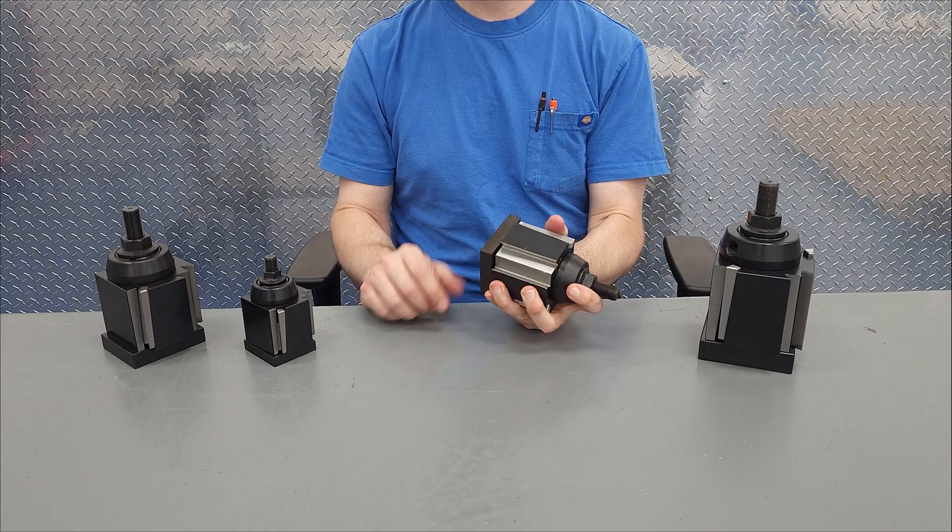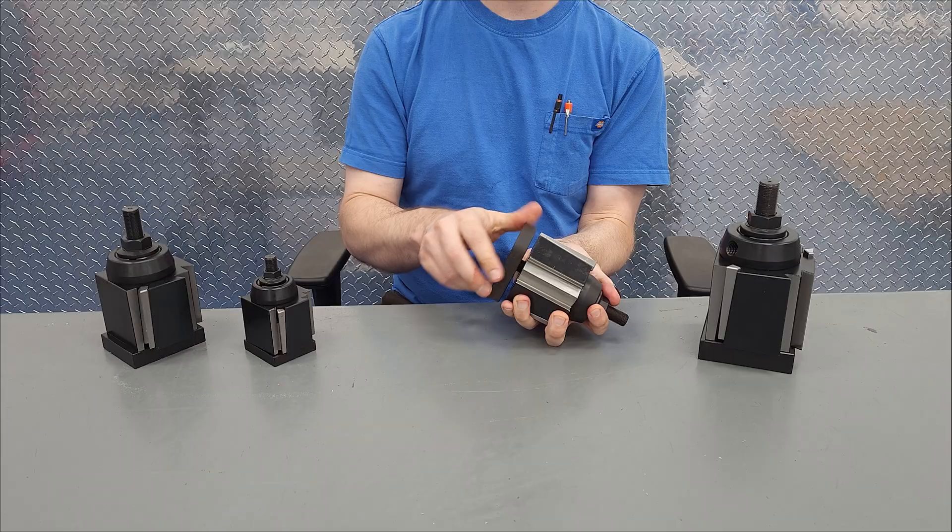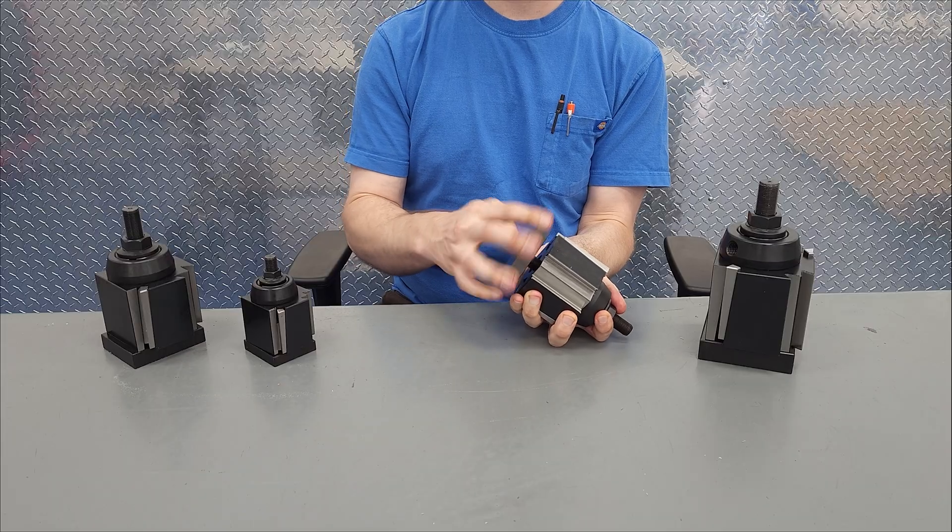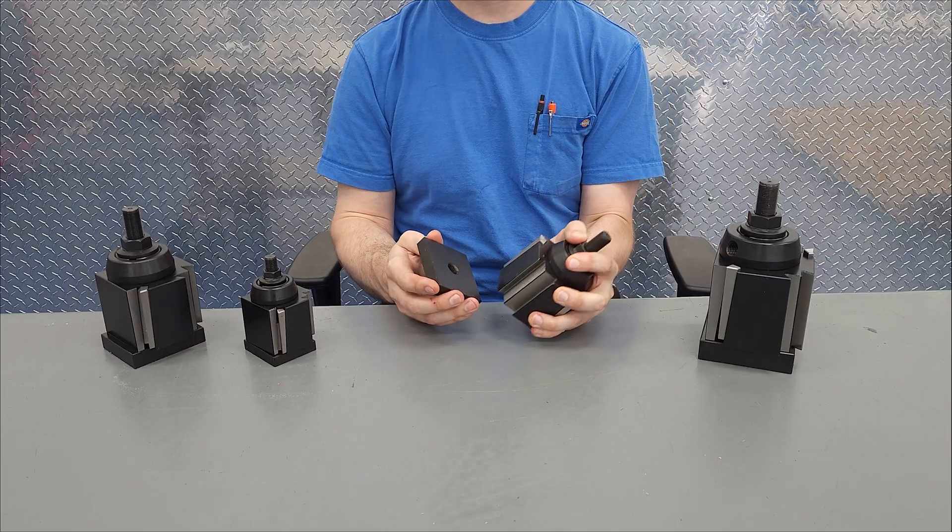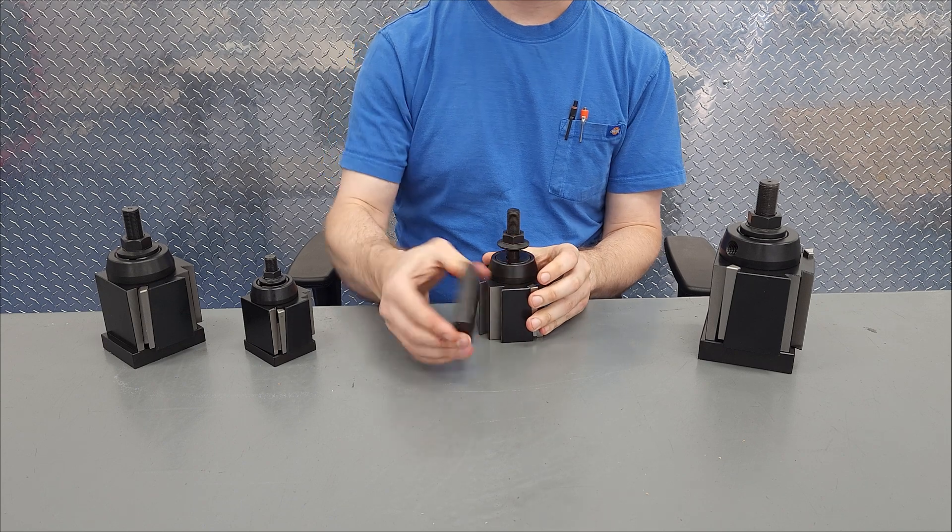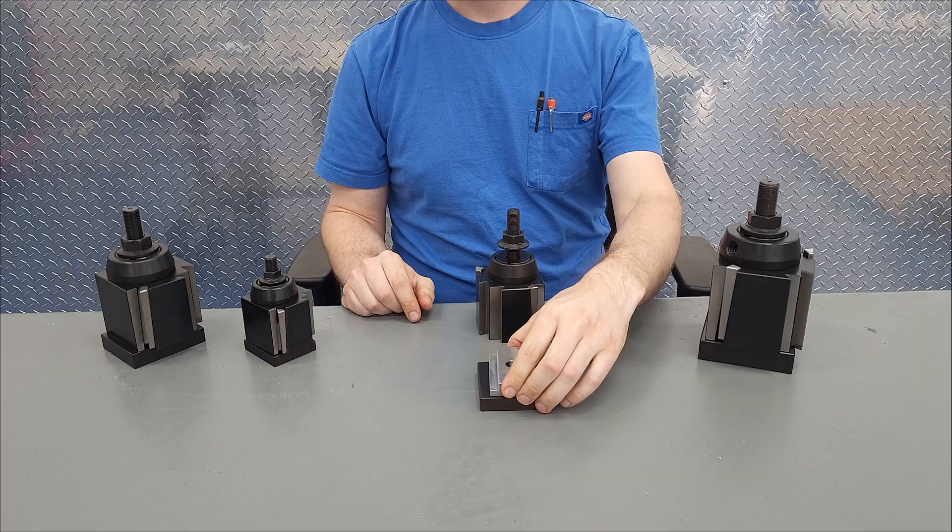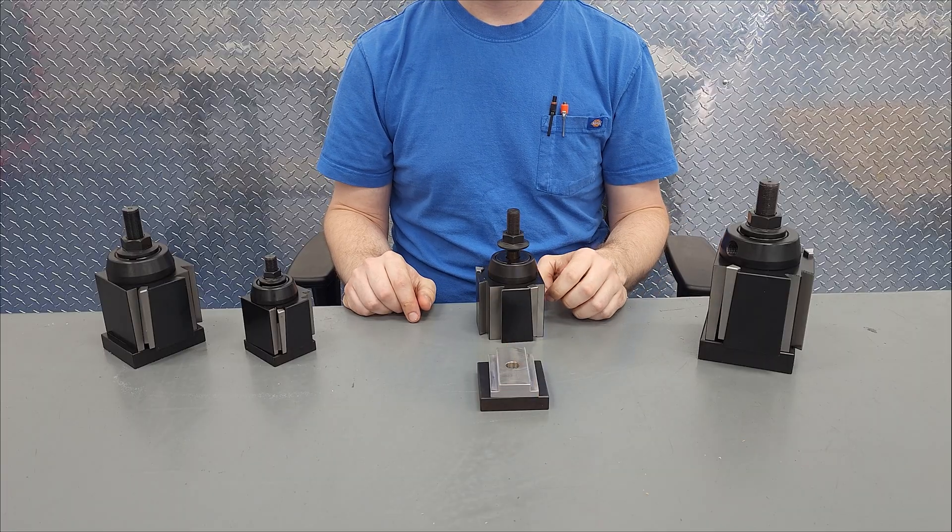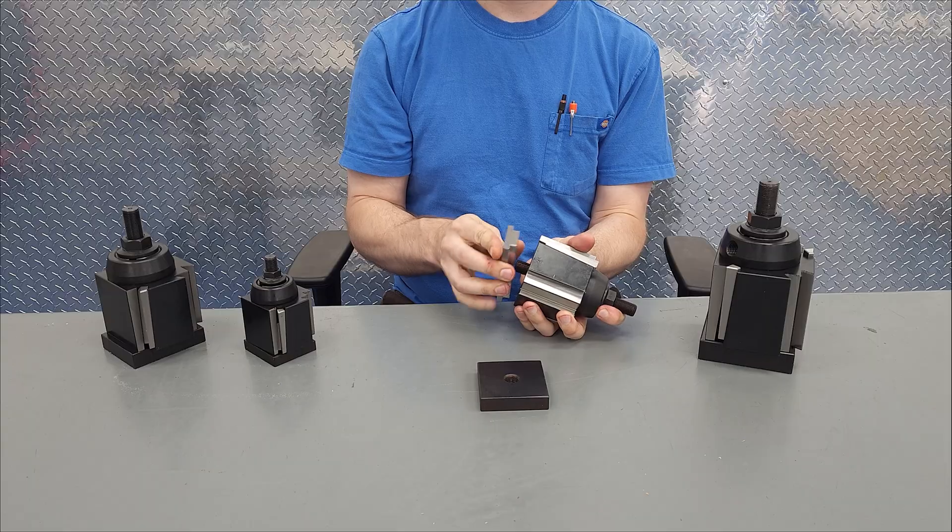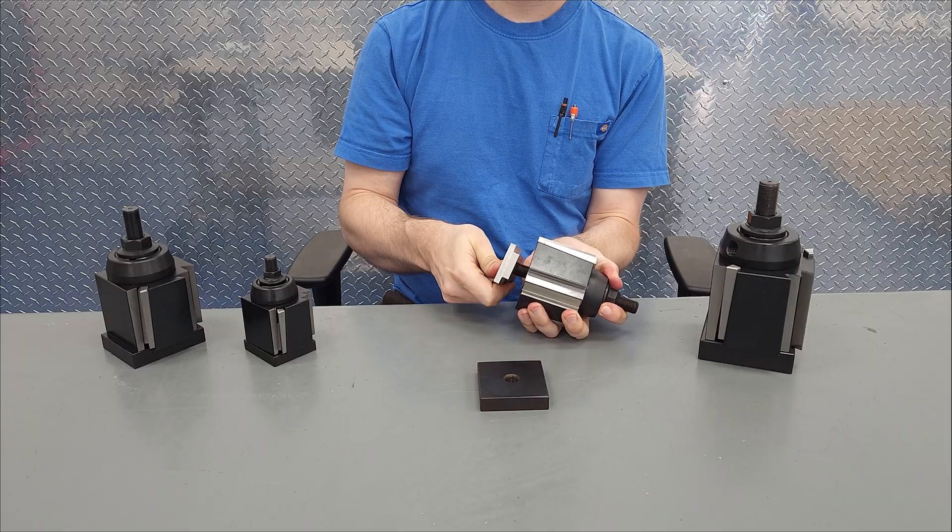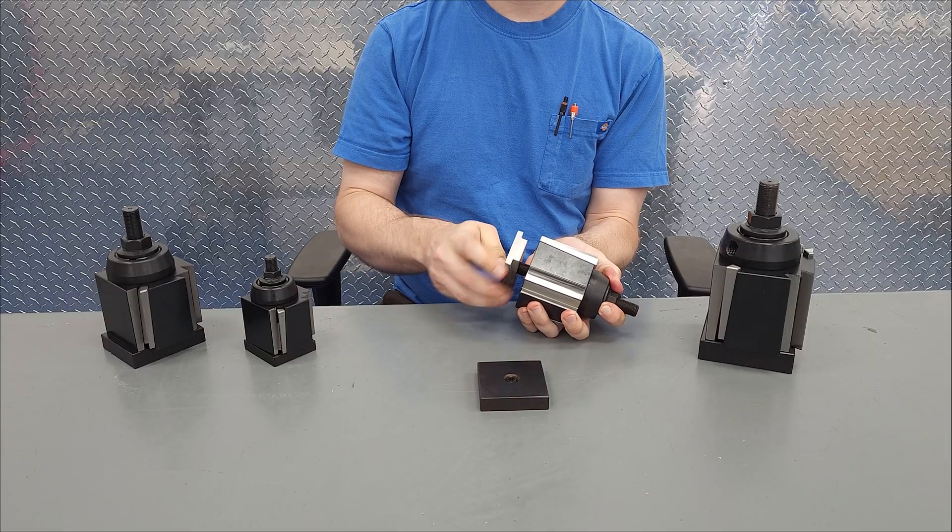For all sizes of tool posts, it's going to come with a blank block screwed to the bottom. Since every model of lathe needs a differently dimensioned T-nut, that block is meant to be machined into whatever size T-nut that you need. Here's the finished T-nut. As you can see, it screws right on. So how do we get from the blank block to the finished T-nut? You have a couple of options.